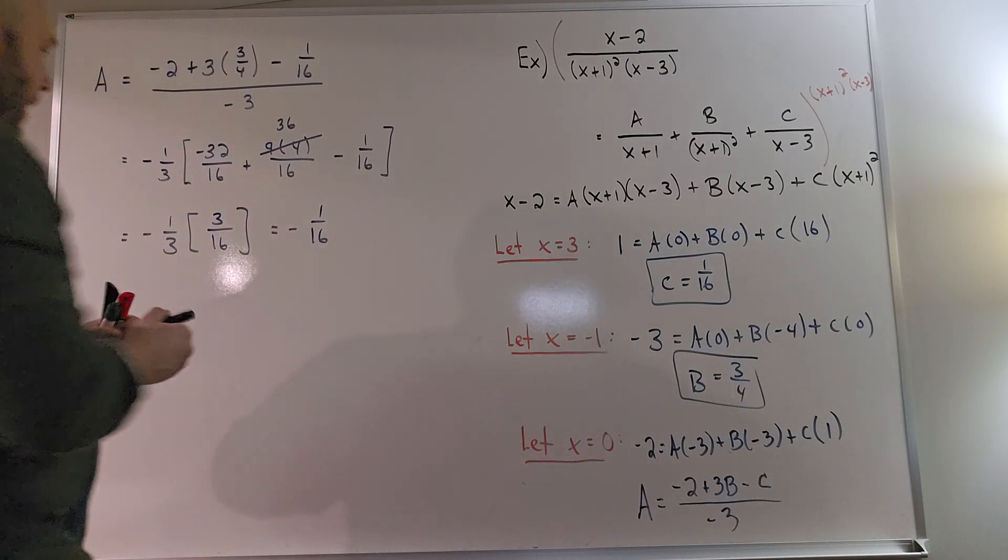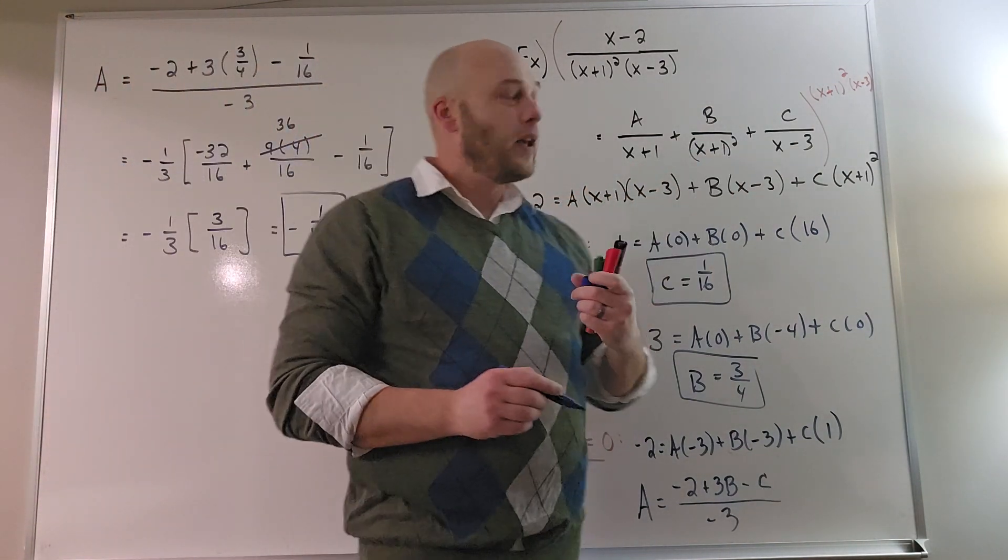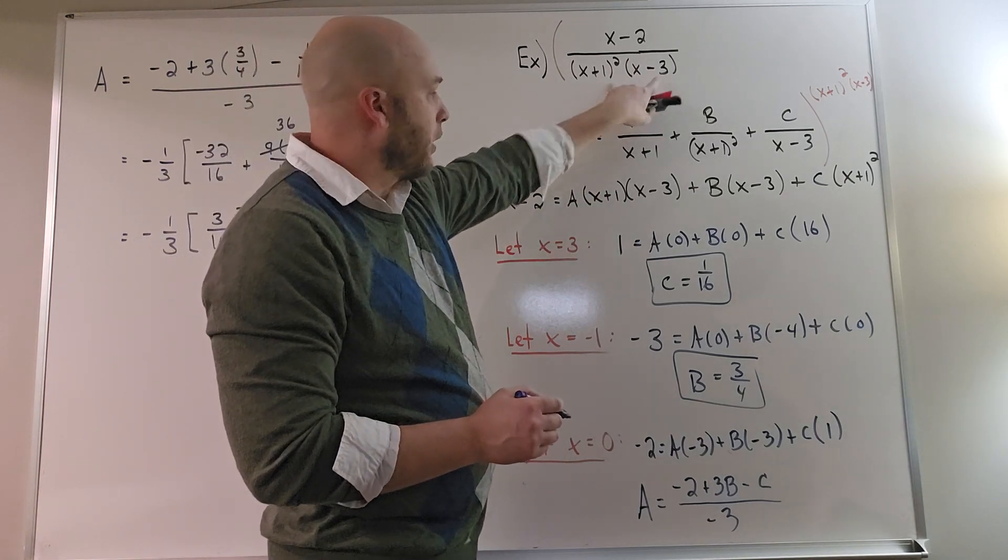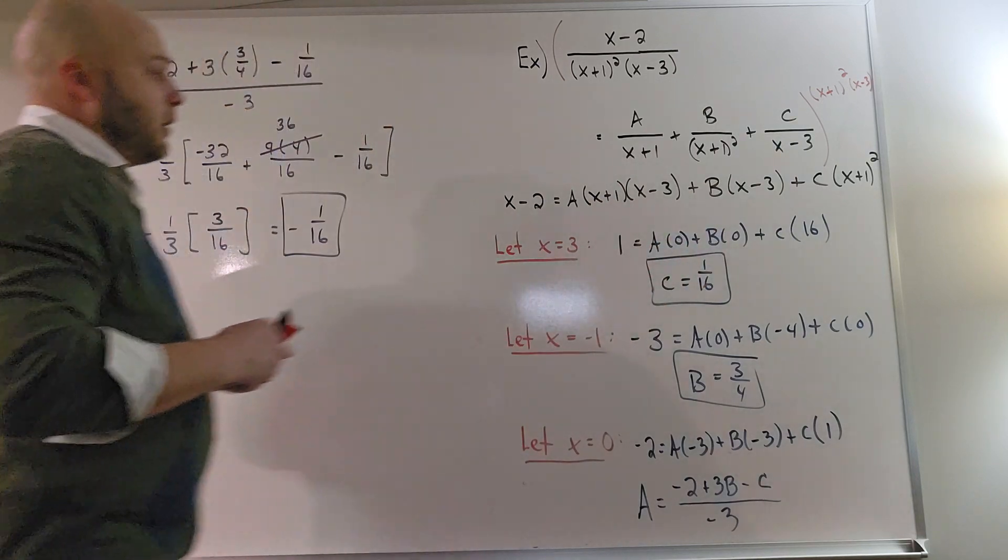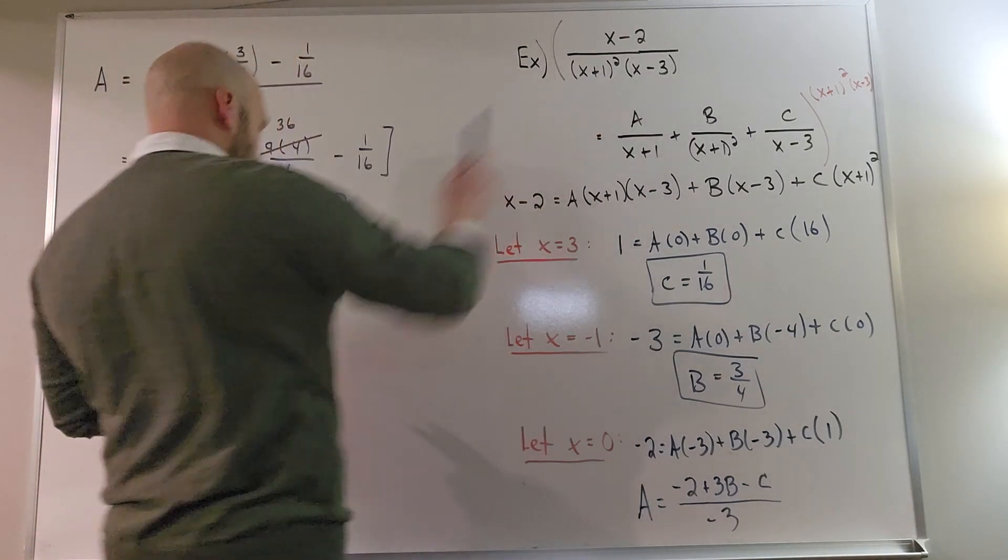So now I have my a, b, and c values for my generic expansion. And again, notice that this expression here looks challenging to integrate, and these terms are all pretty simple. Let's wrap up this example by saying, all right, well, suppose I wanted to integrate this.